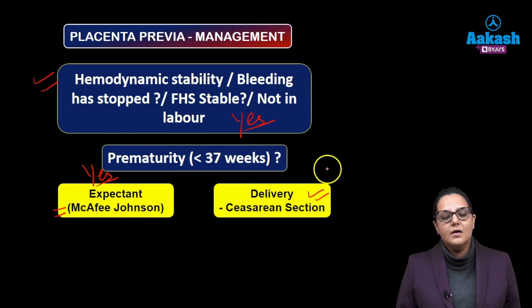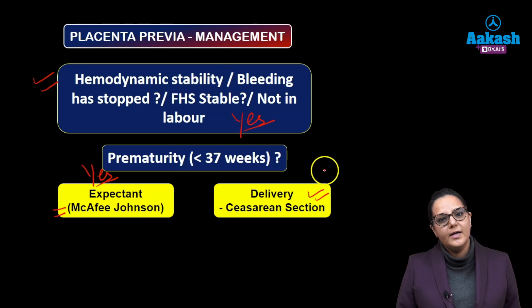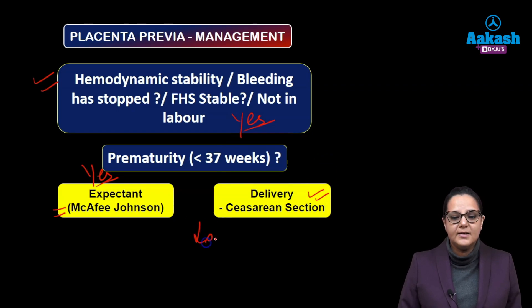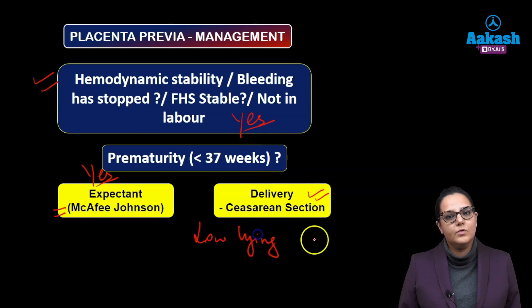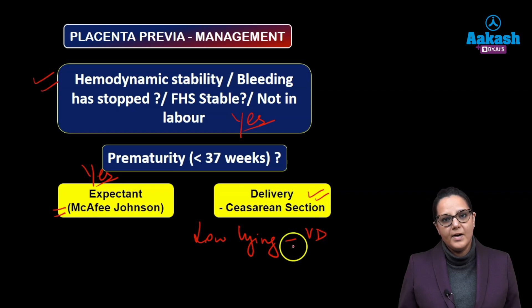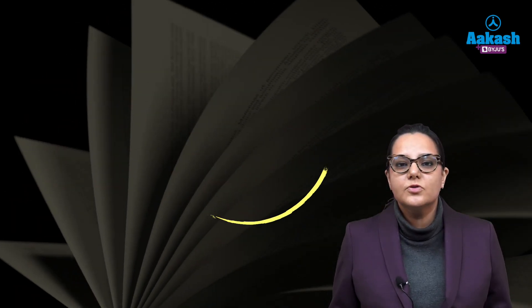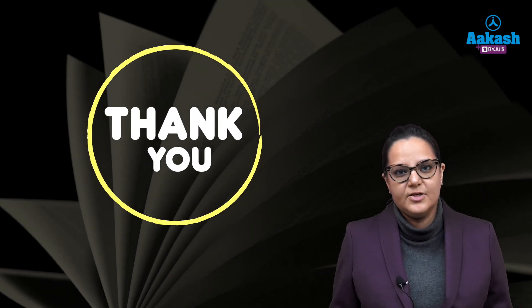Now, why did we classify the placenta into low-lying and major placenta previa? The importance comes here: if the placenta is low-lying, then we can go for a vaginal delivery. But if it is a major placenta previa, then we have to go for a caesarean section. So this was all about placenta previa. Thank you.